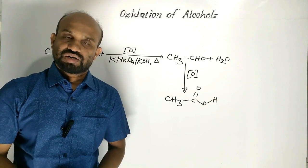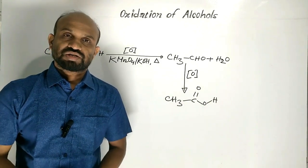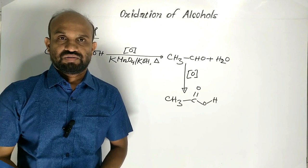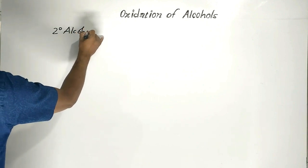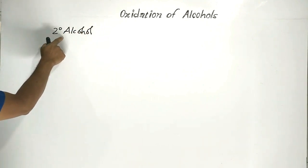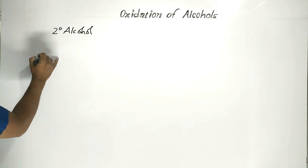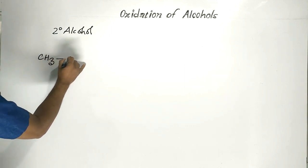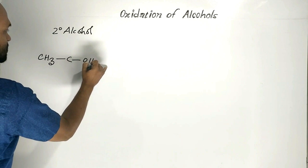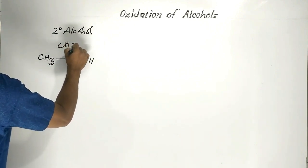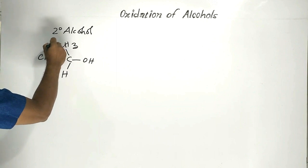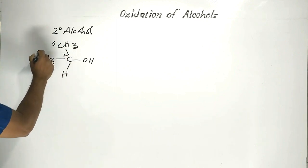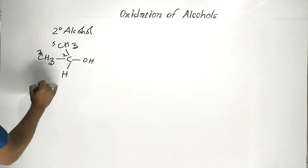Oxidation of 1 degree alcohol is complete. Now let us see oxidation of 2 degree alcohol. Let us take 2 degree alcohol. This is 2 degree alcohol. Its name is propanol-2.